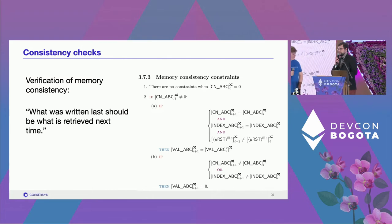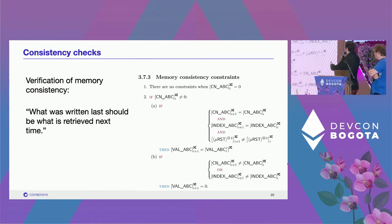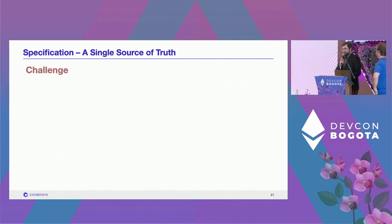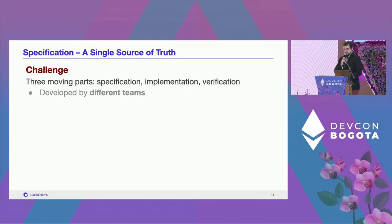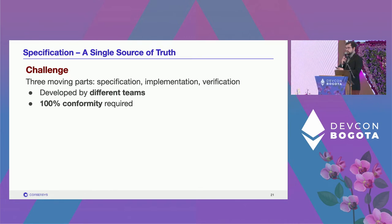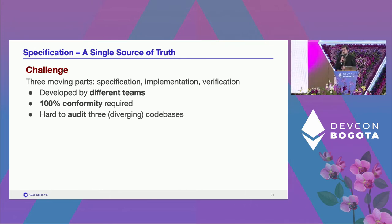Thank you for that description of the constraint system and arithmetization. Now I'll talk about how we go from this conceptual data to the actual implementation. There are major challenges in going from specification to implementation — the biggest is that there are three moving parts: the actual 250-page specification, the implementation of the specification, and the proof system for verification of the traces. All developed by different people on different teams, yet requiring 100% conformity. If the prover proves something different from what the spec describes, nothing will work.